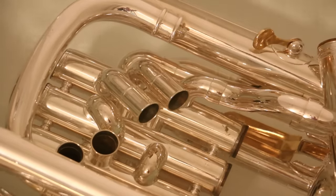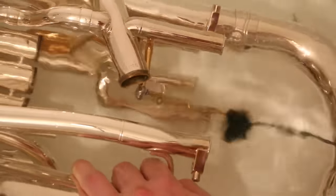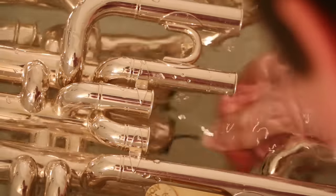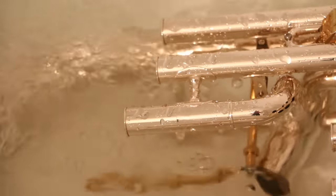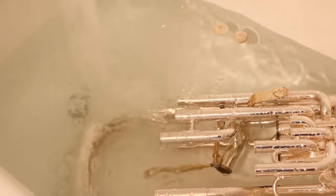Let it soak for about 30 minutes and then start to clean it with your snake and your cleaning brush. Now take your time with this and be really thorough. It will take a few passes to get everything out. Once you're done, empty the water and make sure no dirt is left in the tub. Fill it again with some warm water and let it soak for another 30 minutes.